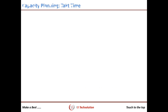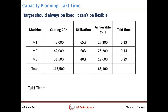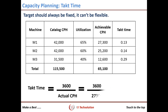Let's check how to set the program cycle time target. The line-wise target should be fixed for all models. For that, you first need to decide your line tack time — the time taken by the pick and place machine to place one component. In one company example, we first made the program with best optimization and decided the maximum achievable capacity. We considered M1 at 65% of catalog CPH, M2 at 60%, and M3 at 40% as M3 was a multi-mounter.